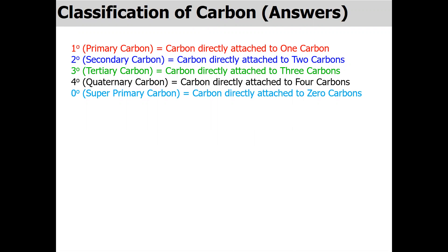Two degree carbon, or secondary carbon, is when a carbon is directly attached to two carbons. Three degree carbon means the carbon is directly attached to three carbons, and quaternary carbon is when a carbon is directly attached to four carbons. When a carbon is not directly attached to any carbon, it is known as super-primary carbon.